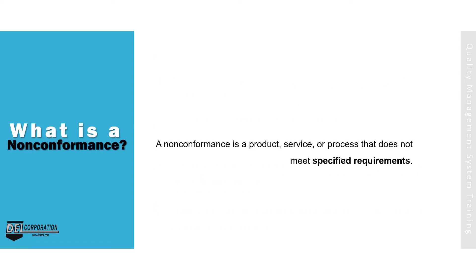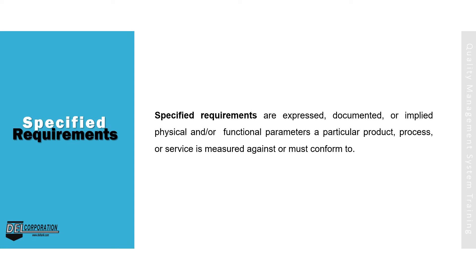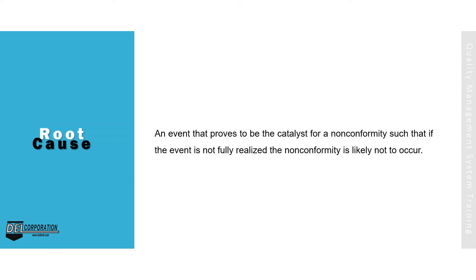The next few slides are some definitions common to the quality management system. A non-conformance is a product, service, or process that does not meet specified requirements. Specified requirements are expressed, documented, or implied physical and/or functional parameters that a particular product, process, or service is measured against or must conform to. The root cause is an event that proves to be the catalyst for a non-conformity such that if the event is not fully realized the non-conformity is likely not to occur.